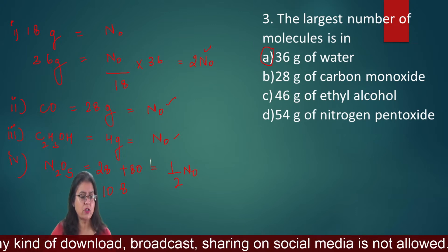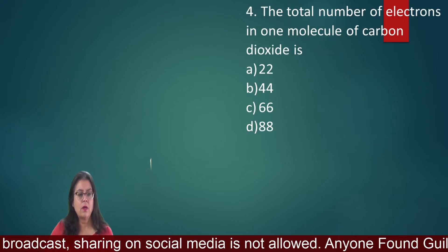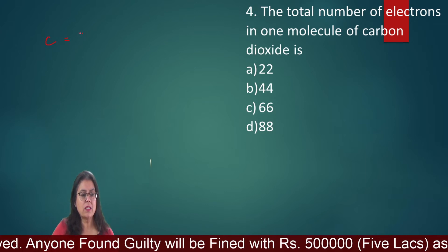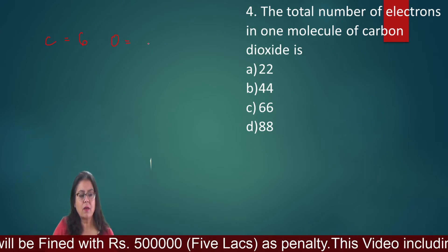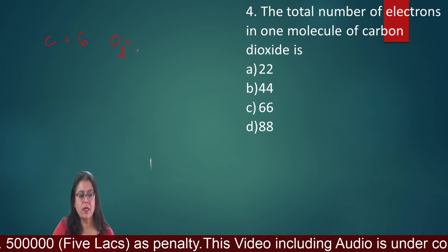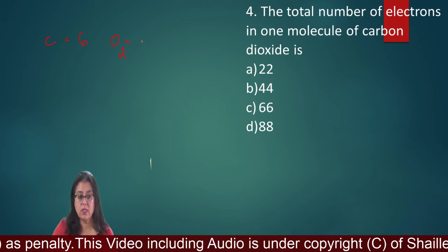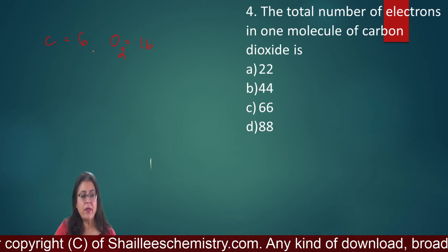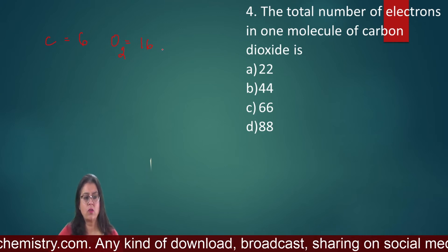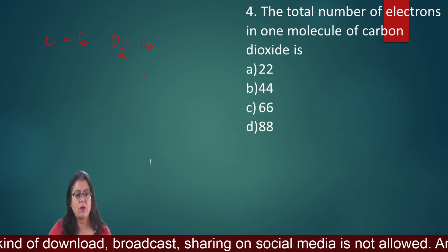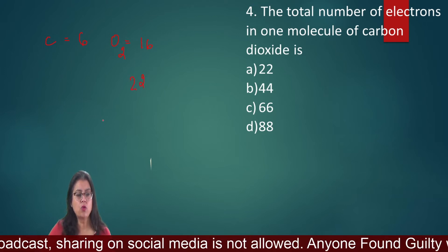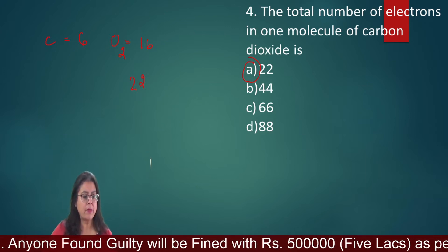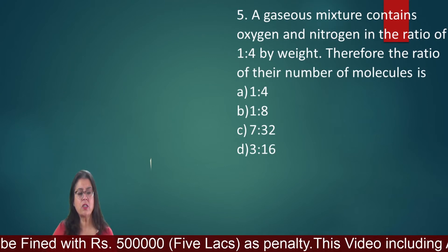Question number 4: Total number of electrons in one molecule of carbon dioxide. Carbon has 6 electrons, oxygen has 8 electrons, and CO₂ has two oxygens so 8×2 = 16 electrons from oxygen. Total = 16 + 6 = 22 electrons present in one molecule of CO₂.